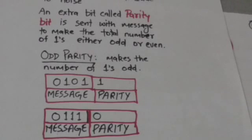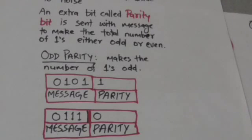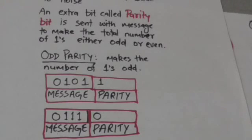When this message reaches the destination, the message including the parity bit is checked to see if it contains an odd number of ones or not. If the number of ones is not odd in the message received at the destination, then it means there is some error.